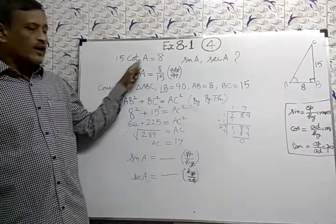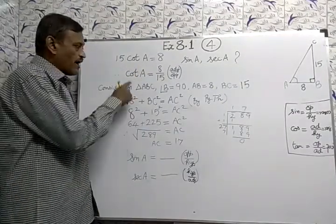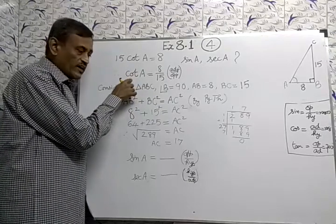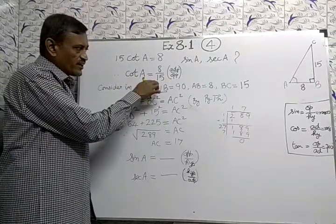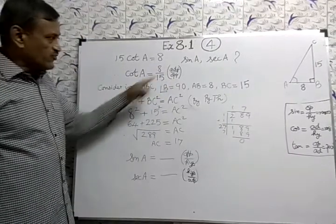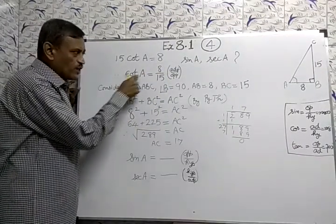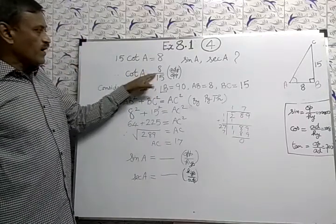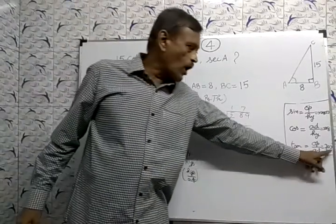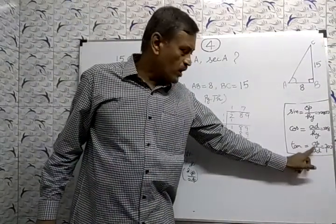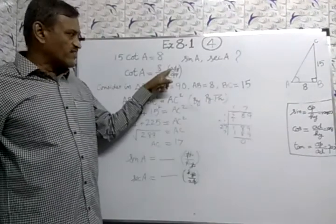15 cot A equals 8. I write cot A here, 15 goes down because we want the ratio of the sides. So cot A equals 8 by 15. What is cot? Cot means adjacent by opposite, adjacent side by opposite side.